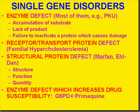Let's talk about single gene disorders. The easiest and most classical way to remember genetic diseases is to have a single defect producing a single abnormal protein. That protein may be an enzyme, a transport protein, a structural protein, or an enzyme defect which may increase drug susceptibility.